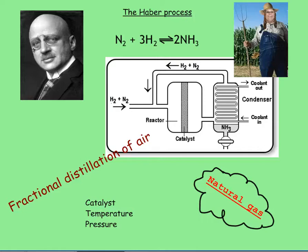The Haber process. Here he is — this is Fritz Haber. Whichever way you wish to call him. Now, he came up with this fantastic process to make ammonia, which was then used to make fertilizers. He went on and made chlorine gas and killed lots of people, but we're not about that. We're talking about the fantastic way he made ammonia.